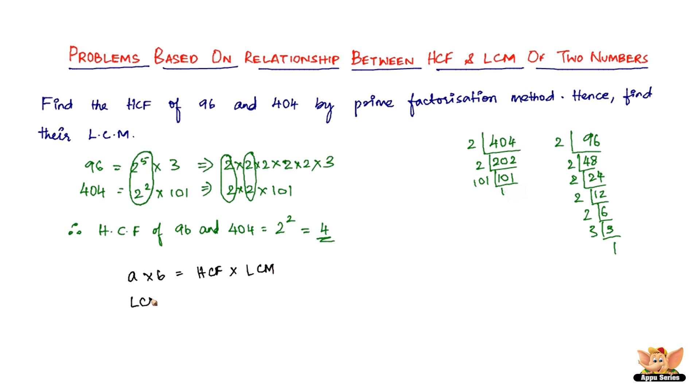So we need to find the LCM. LCM equals a times b, which is 96 into 404 divided by 4. 4 goes 1, not 1 times, 96 times 101 is 9696. So therefore the LCM, the lowest common multiple of 96 and 404, is 9696, nothing less than this. So that's all, this ends this problem.